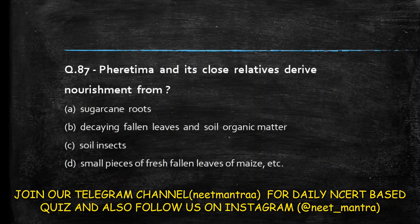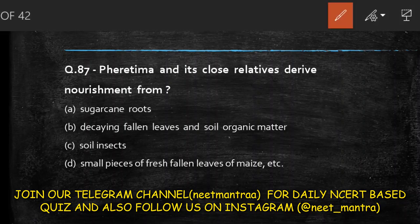Next question: Pheretima and its close relatives derive nourishment from — sugar cane roots; decaying fallen leaves and soil organic matter; soil insects; small pieces of fresh fallen leaves of maize? The answer is option B: Pheretima and its close relatives derive nourishment from fallen leaves and soil organic matter.